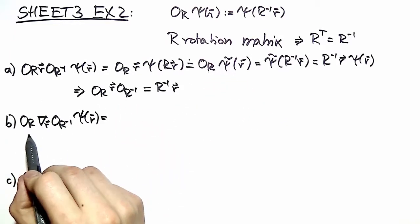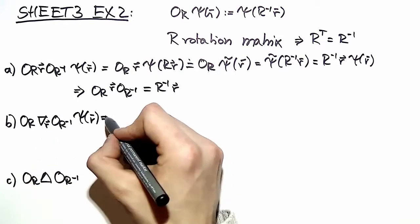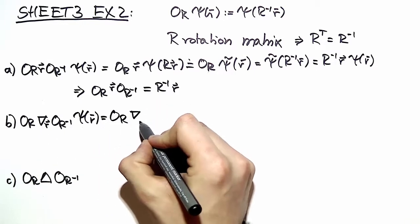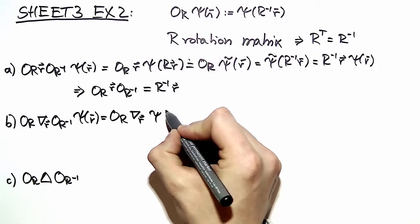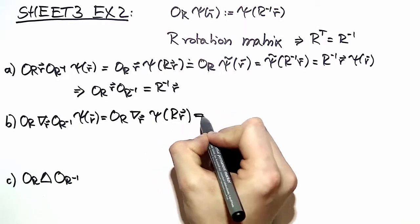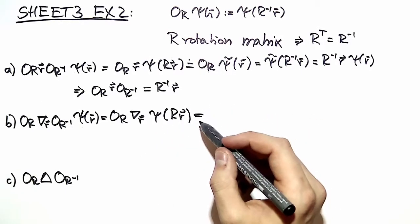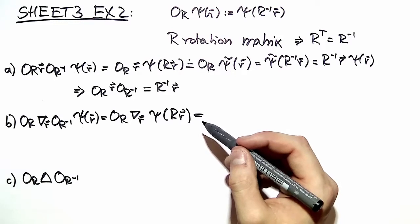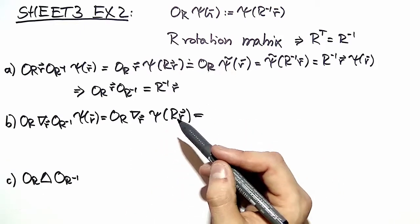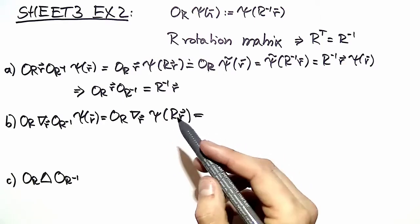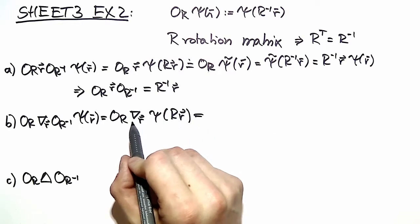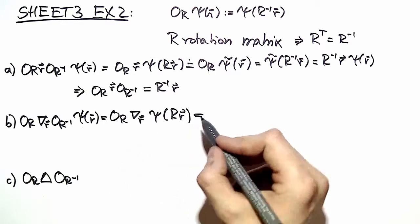In the same way we compute our position operator. In the first step we of course just insert our definition. But then we have to do a little trick again. Because here we have two different variables and we don't know how they transform. So what we do is we change our derivative according to the argument of our wave function.